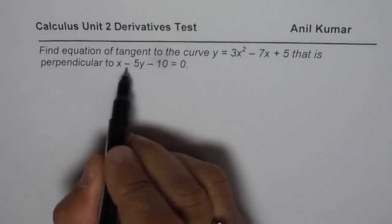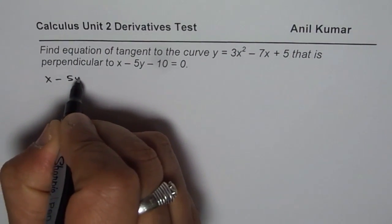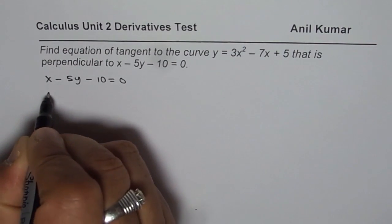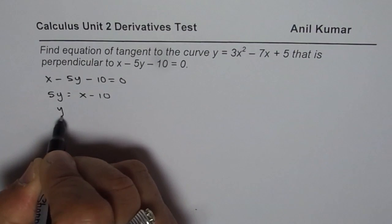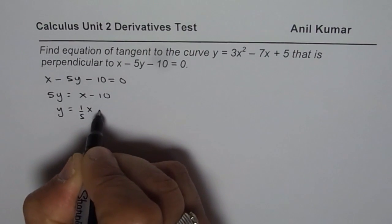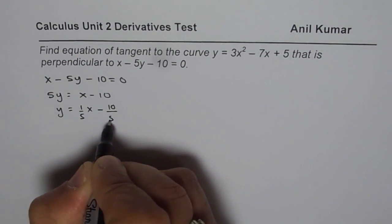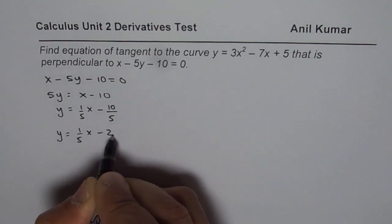So let us find the slope of perpendicular line first. We are given the equation x minus 5y minus 10 equals 0. So we get 5y equals x minus 10 or y equals 1 over 5x minus 10 over 5 and that is y equals 1 over 5x minus 2.